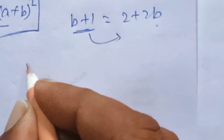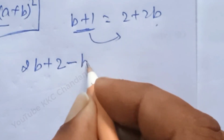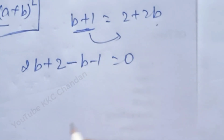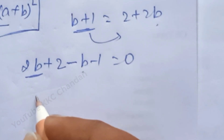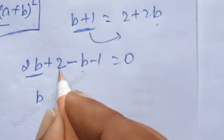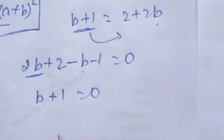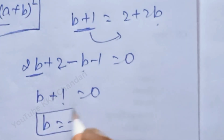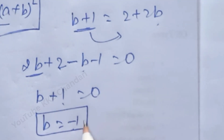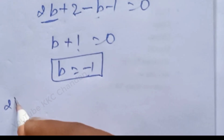After that, bringing all terms to one side: 2b plus 2 minus b minus 1 is equal to 0. After that, b plus 1 is equal to 0. So b is equal to minus 1. This is the final value of b — minus 1. This is the correct way of solving this problem. Now let us look at the second method.